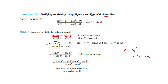One further trick: they pulled a GCF — specifically a negative — out of the denominator. Why? Because it creates a match. Now I have sine of theta minus cosine of theta divided by negative 1. If I divide that negative 1 through, it just changes all the signs, giving me cosine theta minus sine of theta, which is exactly where I needed to go.